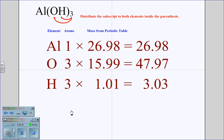So in this case, when we multiply out the masses, one times 26.98, three times 15.99, and three times 1.01, we get the values 26.98 for aluminum, 47.97 for oxygen, and 3.03 for the hydrogen.